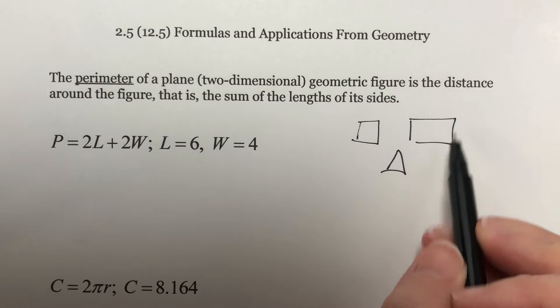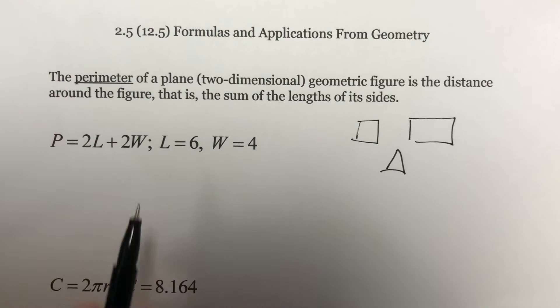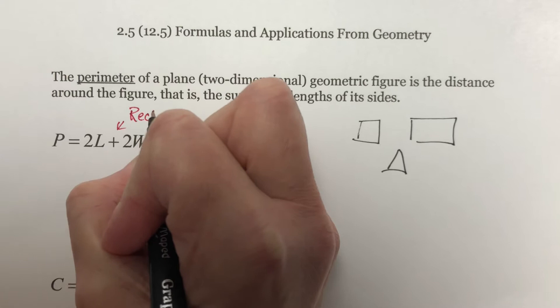Now, mainly in this section, what we're going to be doing is talking about using formulas. In this case, they've given you a formula. What this is, this is the perimeter of a rectangle.